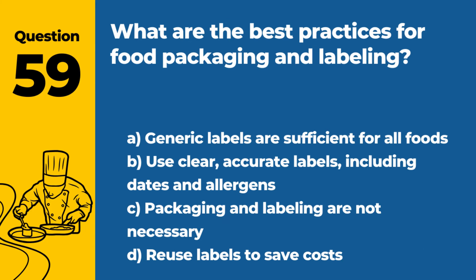Question 59. What are the best practices for food packaging and labeling? a. Generic labels are sufficient for all foods. b. Use clear, accurate labels, including dates and allergens. c. Packaging and labeling are not necessary. d. Reuse labels to save costs. Answer b. Use clear, accurate labels, including dates and allergens. Best practices for food packaging and labeling include using clear and accurate labels that provide essential information, such as dates, ingredients, and allergen warnings.